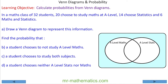Now let's move on to Venn diagrams. It's a good way to see what outcomes can fall in one category but not the other, or can overlap two categories. In a maths class of 32 students, 20 choose to study maths at A-level, 14 choose statistics, and 6 choose maths and statistics. Draw a Venn diagram to represent this information.